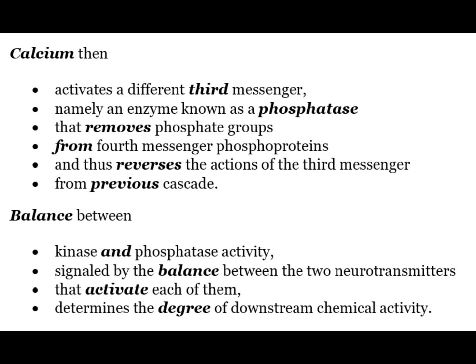The balance between kinase and phosphatase activity, signaled by the balance between the two neurotransmitters that activate each of them, determines the degree of downstream chemical activity.